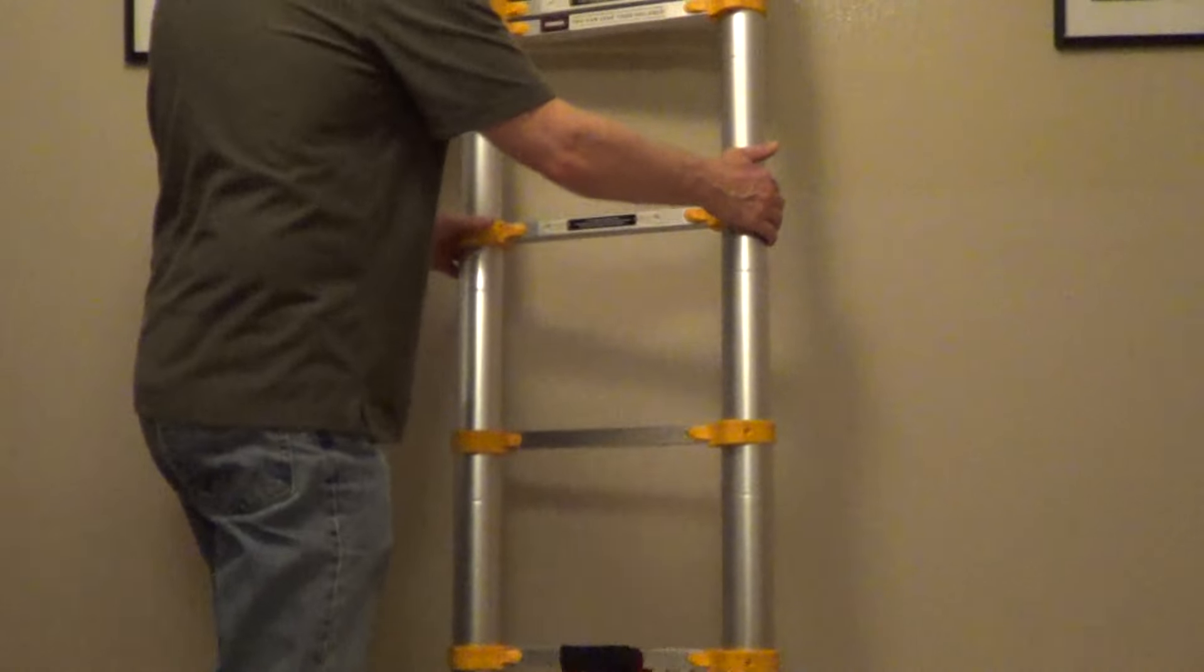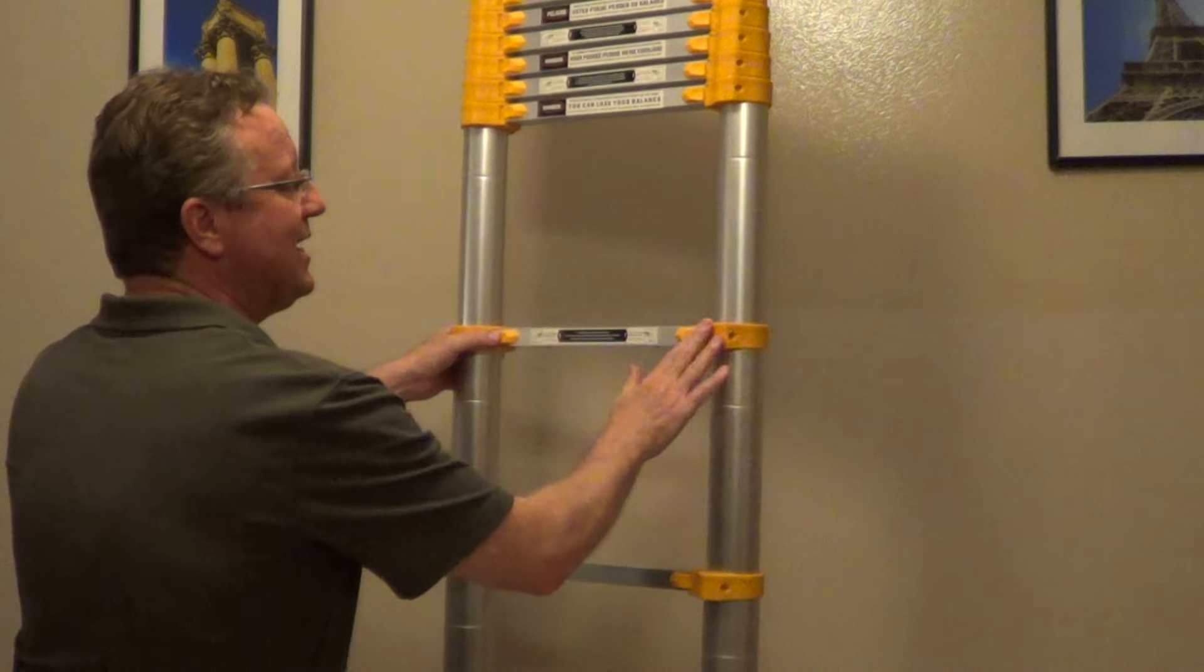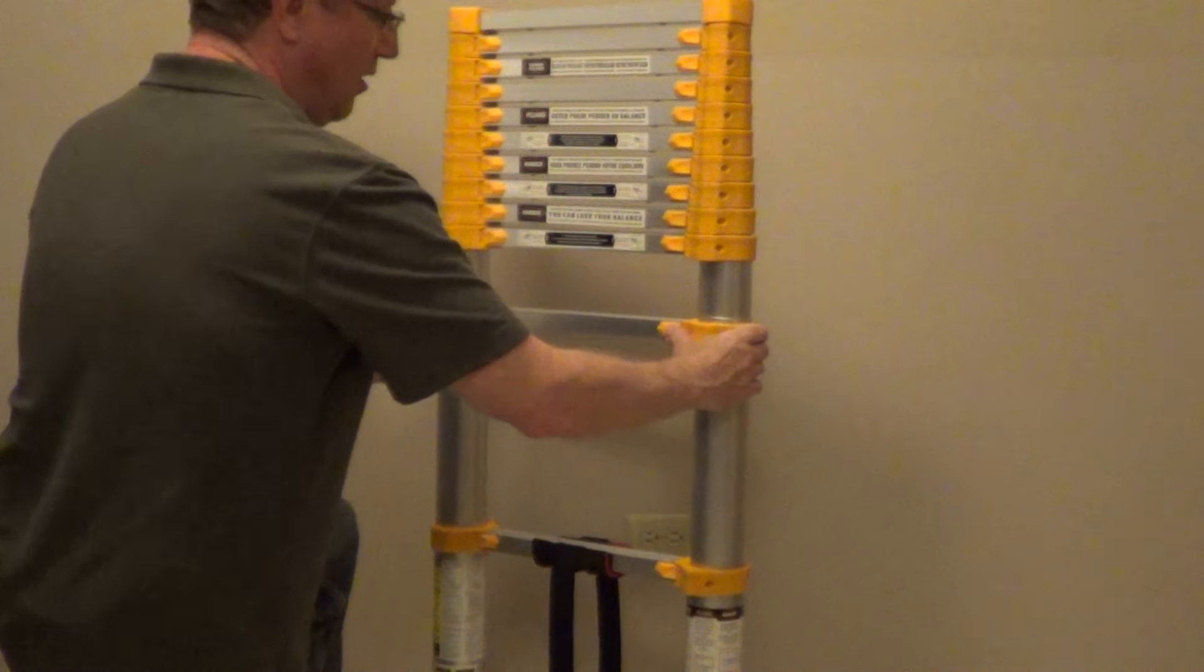When you're collapsing the ladder, you want to start at the highest point you can reach. Keep your hands on the outside on these couplings on the ladder, push in the latches, and then work your way all the way down.